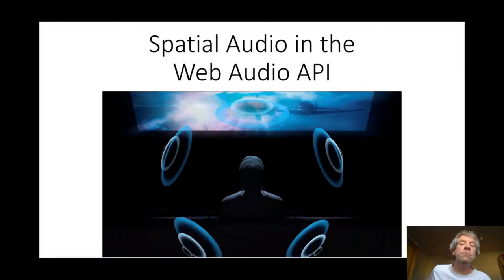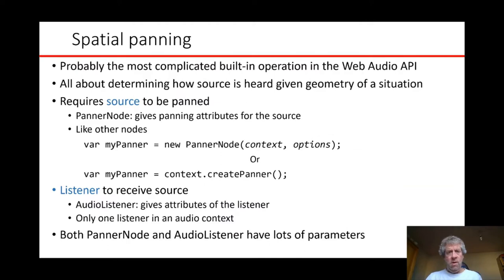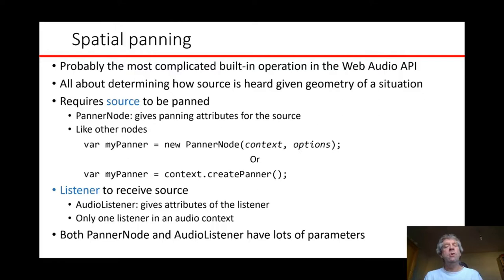Hello and welcome to another lecture in sound design. Here we will be talking about spatial audio in the Web Audio API. Spatial panning is probably the most complicated built-in operation in the Web Audio API — it involves the audio node with the most parameters, some of which are quite complex. You need to work not just with one node but also with a property of the audio context: the audio listener.